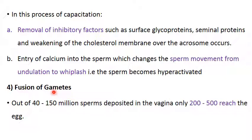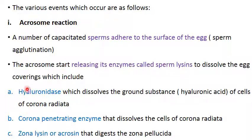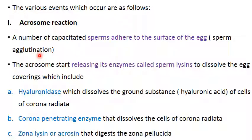The fourth step is fusion of gametes. Out of 40 to 150 million sperms deposited in the vagina, only a few hundred — around 200 to 500 — reach the egg; the rest die while moving through the fallopian tube. Fusion of gametes involves various sub-phases. First is the acrosome reaction: capacitated sperms get attached to the surface of the egg and clump around it, which is called sperm agglutination. Then the acrosome starts releasing enzymes.